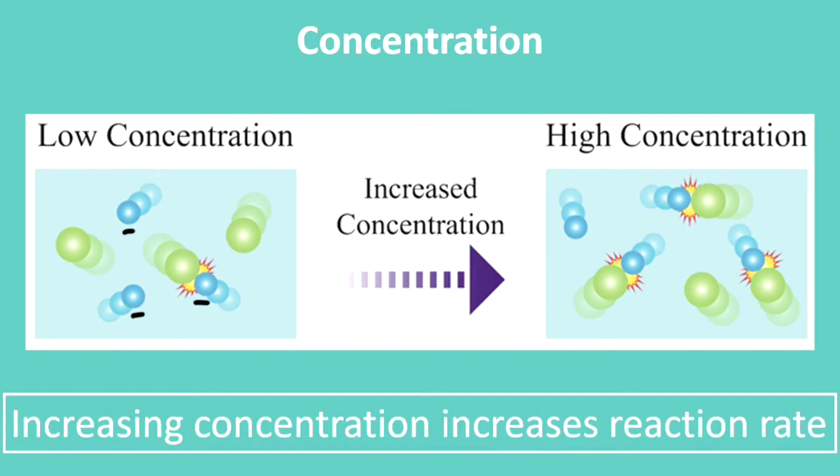So we've just increased how many of our reactants are around. What that does is once again increases the chances of a collision. So you'll notice in the low concentration case, we have one collision, whereas in the high concentration we have one, two, three of these different collisions. So increasing the concentration increases the number of collisions and makes our reaction run faster.